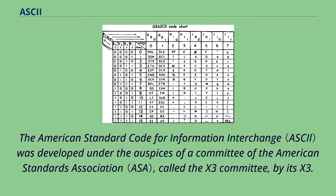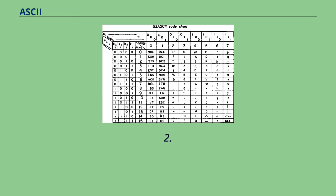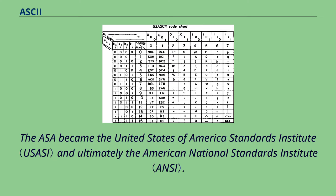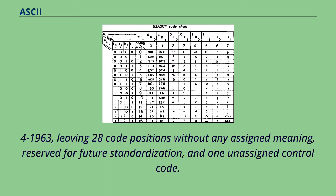The American Standard Code for Information Interchange was developed under the auspices of a committee of the American Standards Association, called the X3 Committee, by its X3.2 subcommittee, and later by that subcommittee's X3.2.4 working group. The ASA became the United States of America Standards Institute, and ultimately the American National Standards Institute. With the other special characters and control codes filled in, ASCII was published as ASA X3.4-1963, leaving 28 code positions without any assigned meaning, reserved for future standardization, and one unassigned control code.